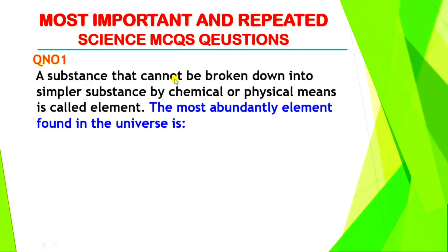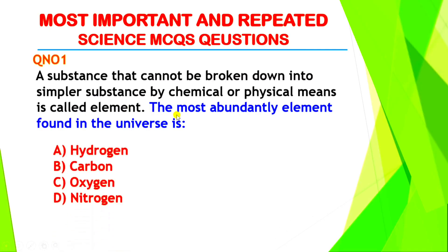Question number one: a substance that cannot be broken down into simpler substances by chemical or physical means is called an element. The most abundant element found in the universe is — the right answer is option A, hydrogen.